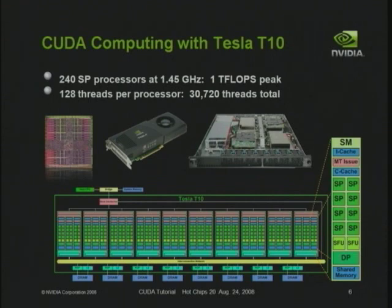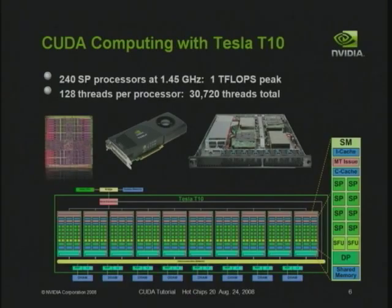Here's the high-end processor architecture underneath the table. It has 240 processor cores and runs about one teraflop peak. Each processor core can execute up to 128 threads in hardware multi-threading form, so the total thread count this single-chip GPU can execute is 30,000 threads. You can buy this GPU today off the shelf as a regular game processor for your PC, or in rack-mount servers — four of those GPUs in a blade server.